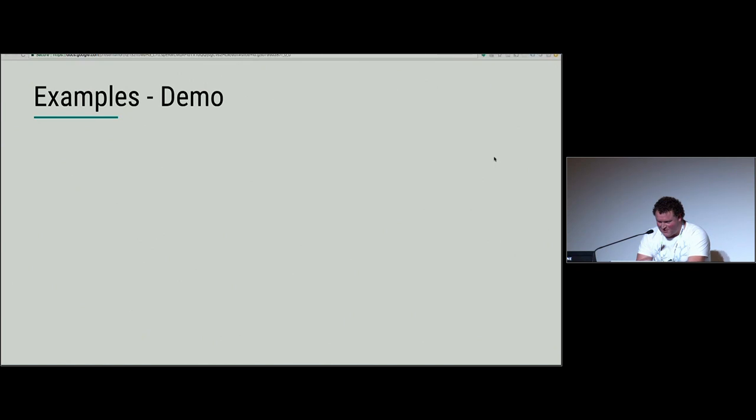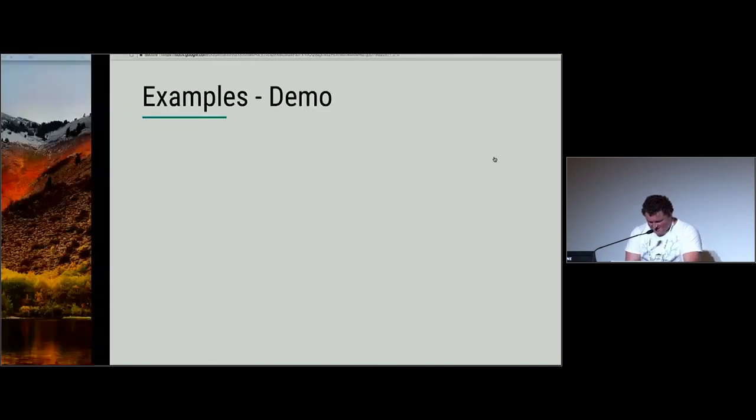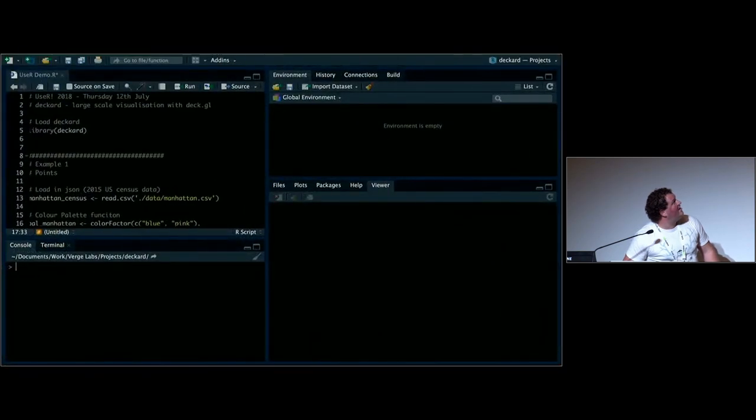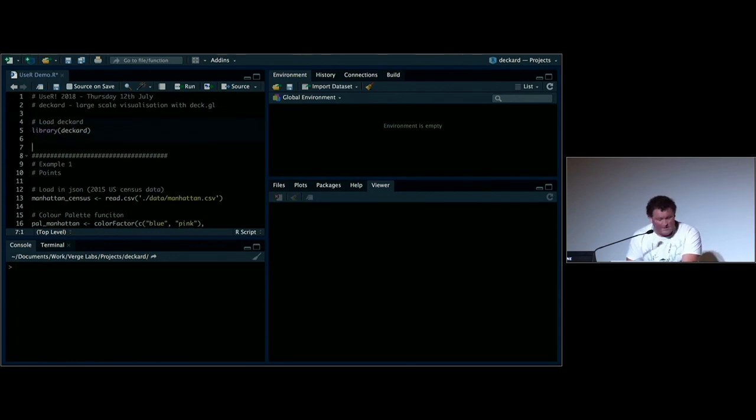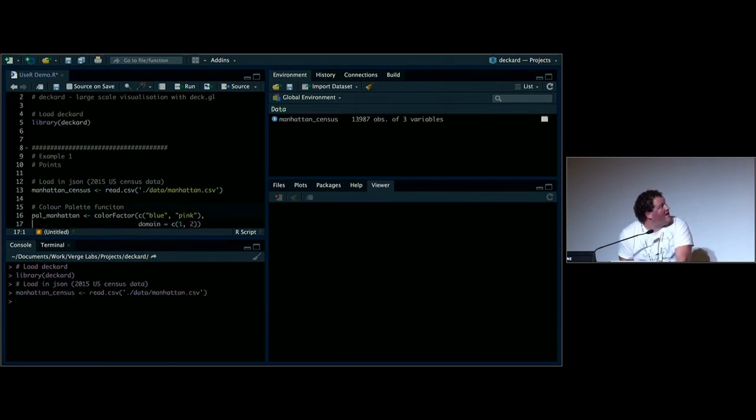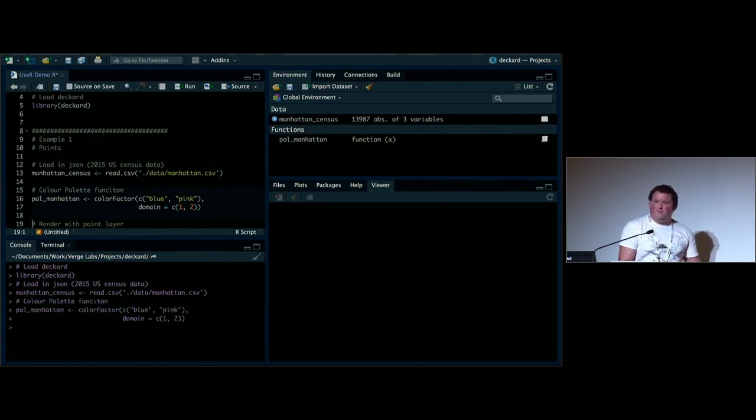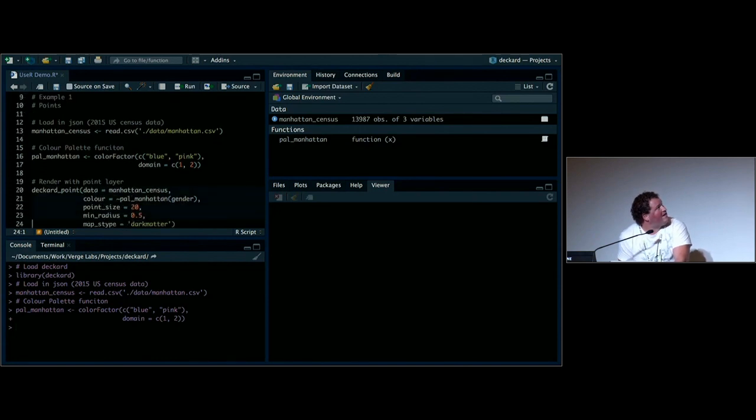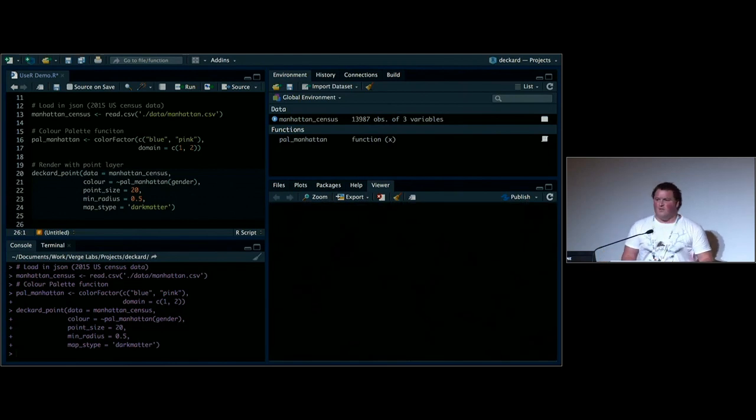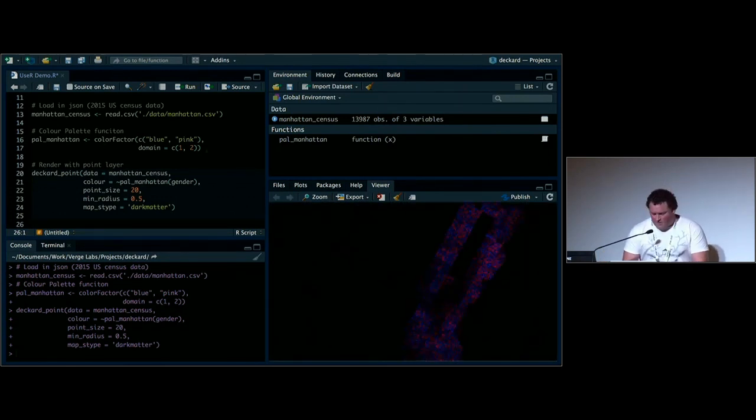Okay, so now the exciting part, we'll switch to a live demo. I just hope that it works. We'll load in the library. The first dataset we're going to be visualizing is just one from the U.S. Census data. We're visualizing the population within Manhattan. We can just read that as a CSV, construct a color palette as we would with something like Leaflet, and then render a points layer. Hopefully, if you've used Leaflet before, this is looking a little bit familiar. The idea was to keep it similar to Leaflet. We've got a few thousand, 13,000 points.